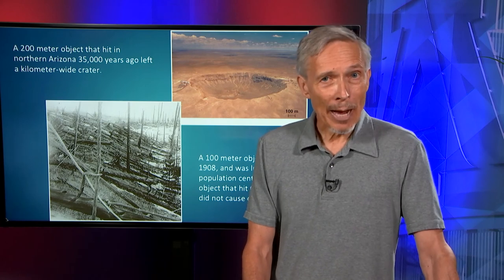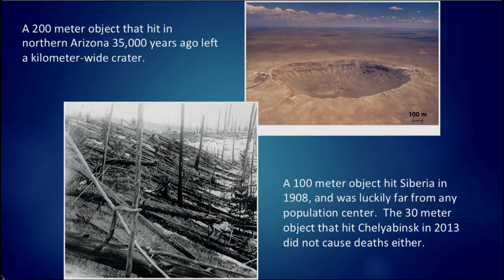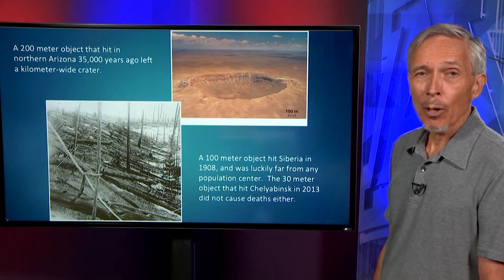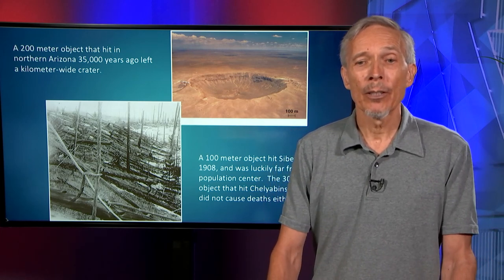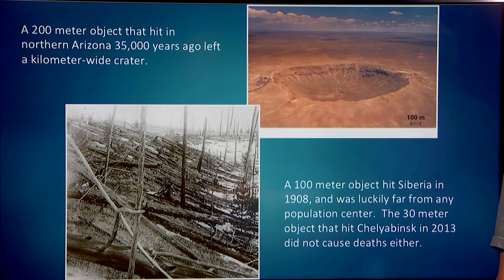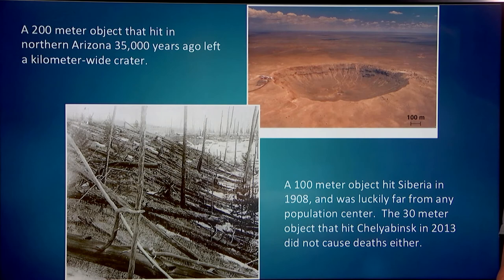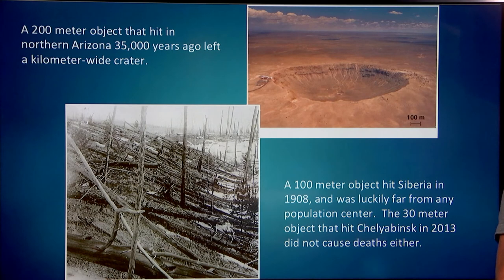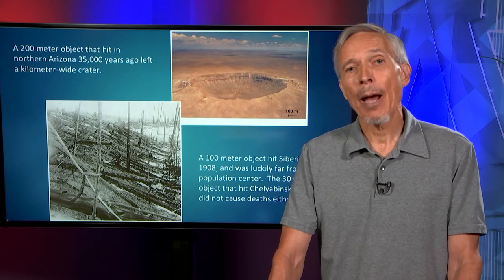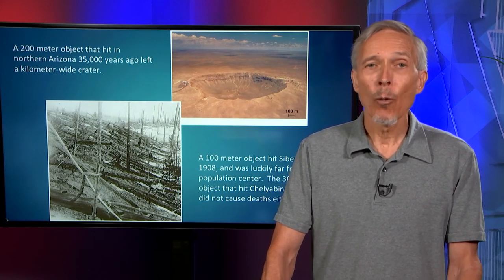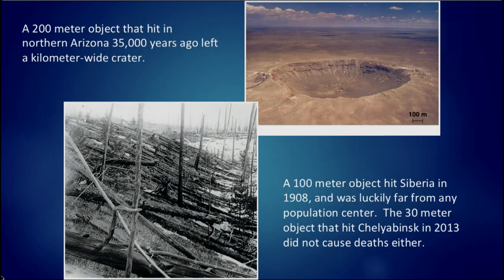We see evidence of impact nearby. In the Arizona desert, there's evidence of a crater from an object probably 200 meters across that hit northern Arizona 35,000 years ago. The crater left by an object is much larger than the object itself, so this crater is about a kilometer wide. Another evidence of an impact — actually an explosion that occurred just before impact — is in Siberia: the Tunguska event of 1908. It was likely a 100-meter-scale object, possibly a comet, and though it was far from any population center, the impact triggered seismographs around Europe as much as a thousand miles away. A more recent event in Russia, the Chelyabinsk object, estimated to be 30 meters across, broke up in the atmosphere and fragments fell to the ground.